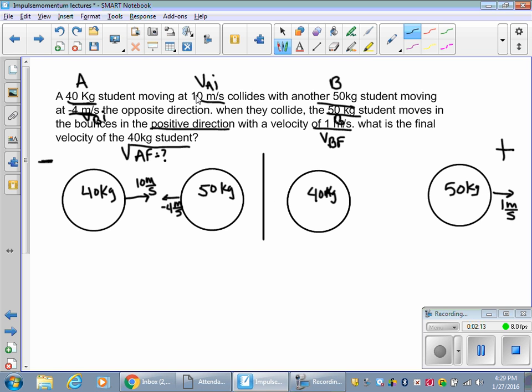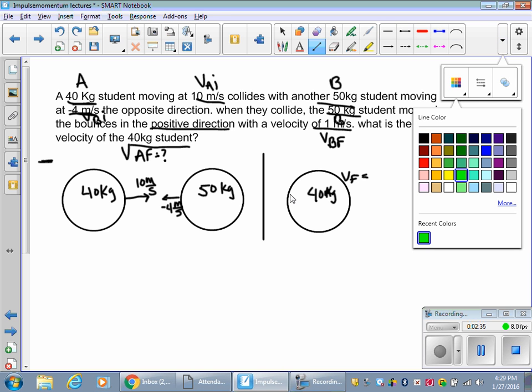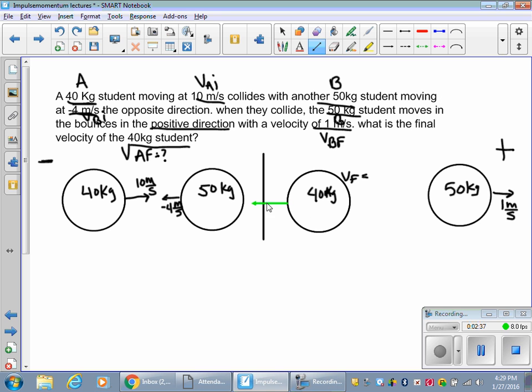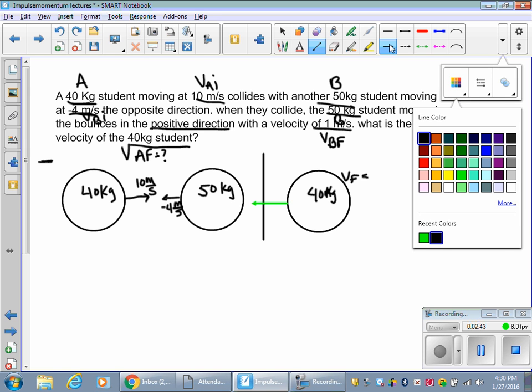I'm just drawing what happened here. What is the final velocity of the 40 kg student? We don't know what direction. It seems like I would think it would go this way. Let's see if we were right. I'm going to put my prediction in a different color so we can see if I was actually right. We'll put it in green. So I think it's going to go that way. Two things bounce off each other, so that's what they're going to do, right? Simple.